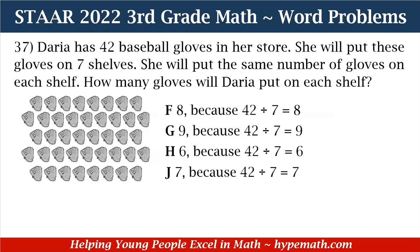Let's dive into our problems. Remember, we have our third grade math review workbook available for purchase in our store. Number 37 says: Daria has 42 baseball gloves in her store. She will put these gloves on seven shelves. She will put the same number of gloves on each shelf. How many gloves will Daria put on each shelf? Answer choices are: F, 8 because 42 divided by 7 equals 8; G, 9 because 42 divided by 7 equals 9; H, 6 because 42 divided by 7 equals 6; or J, 7 because 42 divided by 7 equals 7.